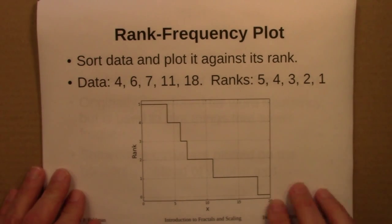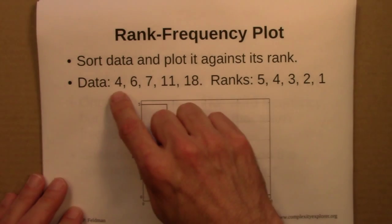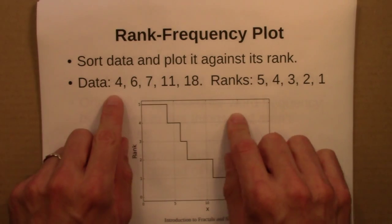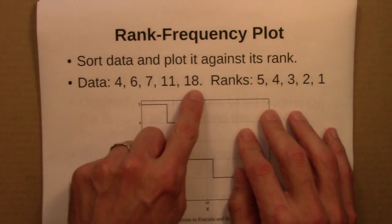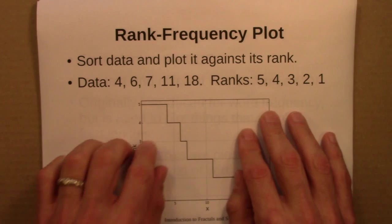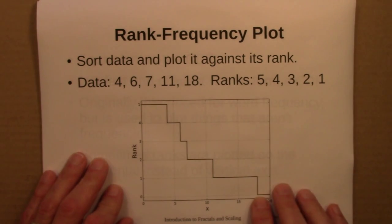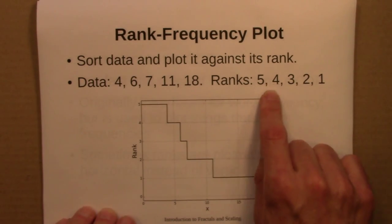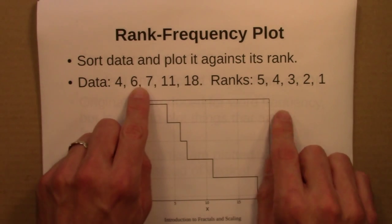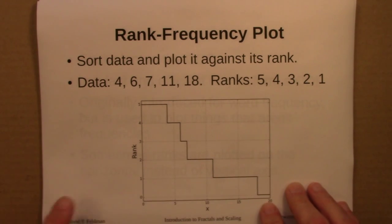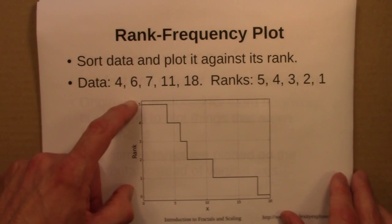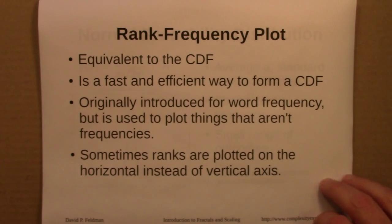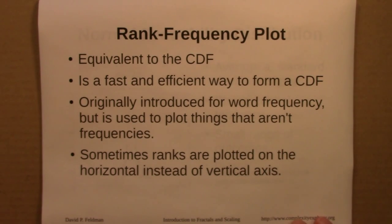Closely related — essentially the same thing — is the rank-frequency plot. To construct one, you sort the data and plot it against its rank. For example, with data points 4, 6, 7, 11, and 18 sorted in increasing order, you list their ranks in decreasing order to get the rank-frequency plot. Dividing by 5 gives exactly the CDF for this data, so rank-frequency plots and CDFs are equivalent up to normalization.